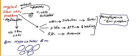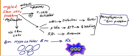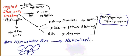Bone marrow is largely replaced by adipose cells. As a result of no stem cells and hypocellular bone marrow, the reticulocyte count will be decreased. Remember, reticulocyte count increases in hemolytic anemia because of destruction, but if you have a bone marrow problem, you will have decreased reticulocyte count.